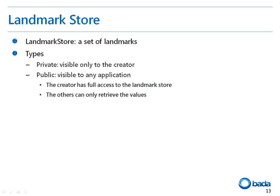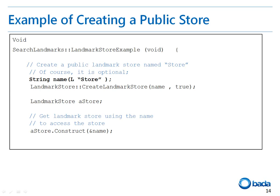A landmark store is a set of landmarks. There are two types of landmark stores: Private, which are only visible to the creator, and Public, which are visible to any application. In the public type, the creator has full access to the landmark store and others can only retrieve the values. In this sample code, I have created the landmark store with the store name. The second parameter of the CreateLandmarkStore API states whether it is public or not — true for public and false for private. Then I use the Construct method to initialize the landmark store.